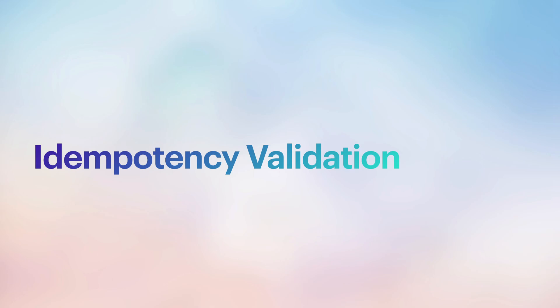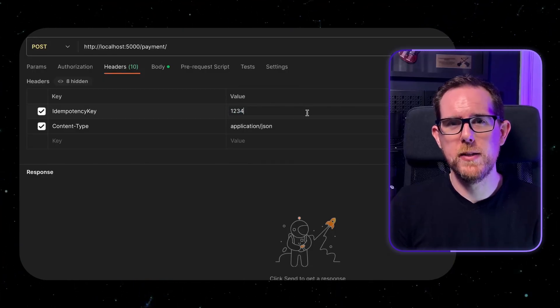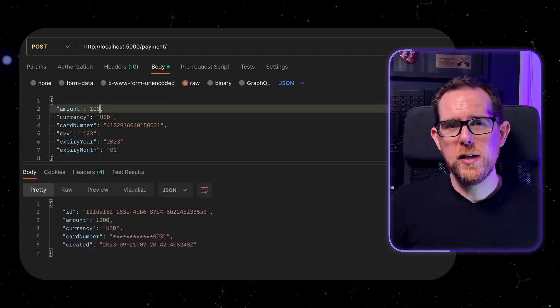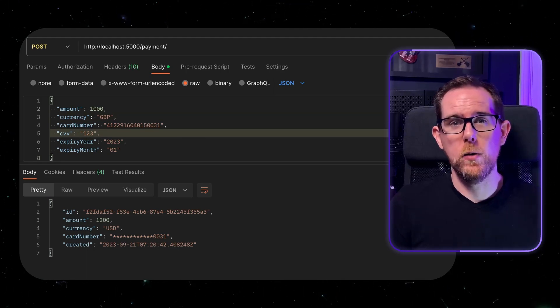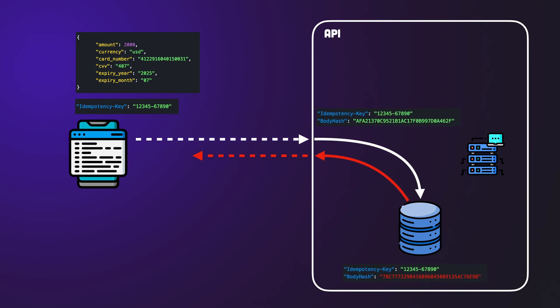You may also want to consider idempotency validation in your API. If a request comes in with the same idempotency key from the same user for the same endpoint, then we're just going to assume that that's the same request and send them out the same response. However, there is a chance that the user has just used the same idempotency key by mistake, and the request body is actually very different. If you need to protect yourself against this sort of scenario, then you can take a hash of the request and store that alongside the idempotency key. And then when the request comes in, you can check to see whether it matches the hash as well, and if it doesn't, then return an error to the user.